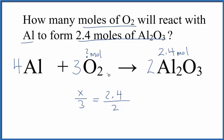You solve for x. You figured out how many moles of oxygen react with this aluminum here to form 2.4 moles of aluminum oxide. So this works. This gives you the correct answer.